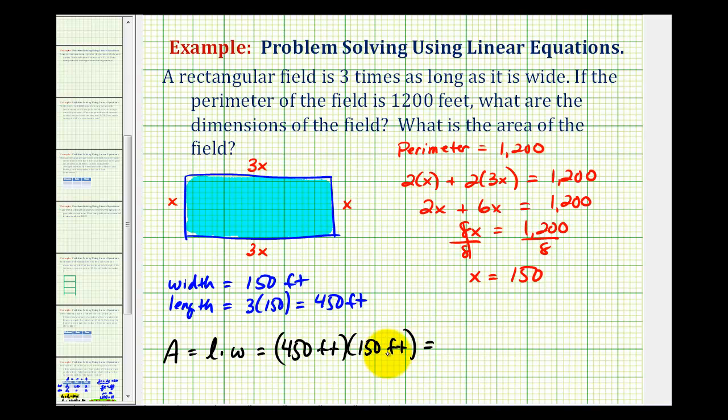Keeping the units in the formula does remind us that the units of this are going to be square feet or feet squared. Then we have 450 times 150 which is 67,500. So the area of this rectangle is 67,500 square feet.